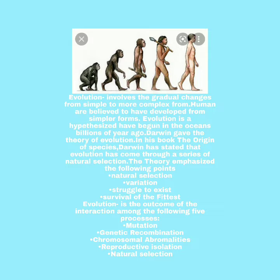Evolution is the outcome of the interaction among the following five processes: mutation, genetic recombination, chromosomal abnormalities, reproductive isolation, and natural selection.